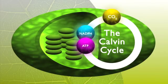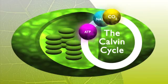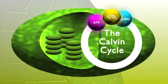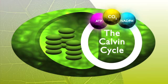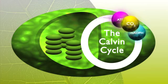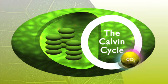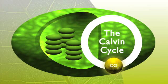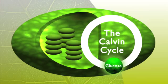In the Calvin cycle, the ATP and NADPH produced in the light reaction are used to fix carbon dioxide into sugar. Fixing means plants take the carbon dioxide gas, which can't be used by animals, and change it into glucose, which they can use.